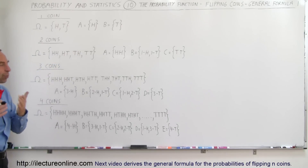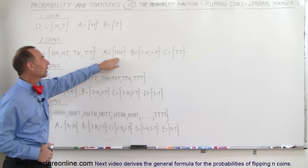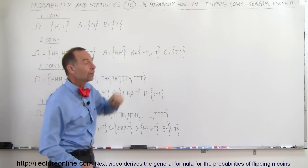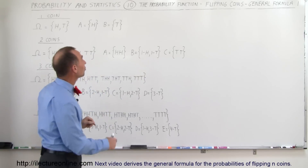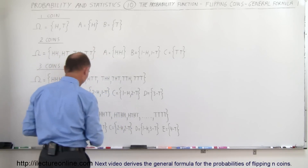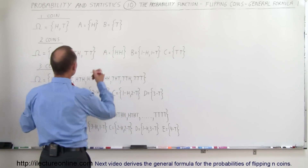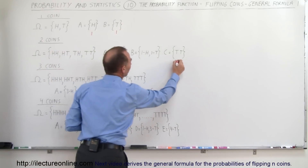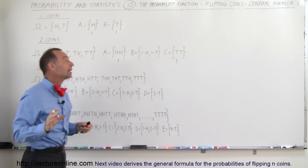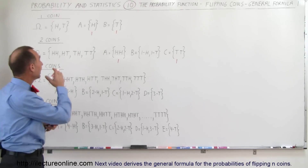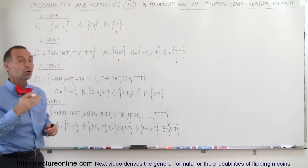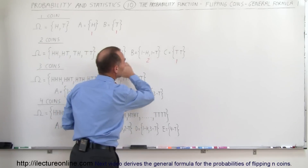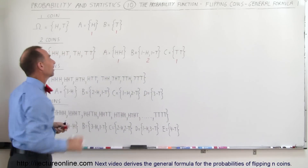With two coins we can have three events: one event where it could be all heads, one event where it could be all tails, and one event where it could be either heads or tails. How many elements are there in each case? There's one element for all heads, one for all tails, but in the case of heads or tails it could be head-tail or tail-head, so there are two elements in that event. They add up to four elements, the same as in the sample space.